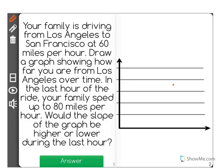Your family is driving from Los Angeles to San Francisco at 60 miles per hour. Draw a graph showing how far you are from Los Angeles over time. In the last hour of the ride, your family sped up to 80 miles per hour. Would the slope of the graph be higher or lower during the last hour?